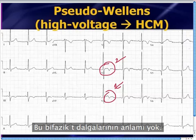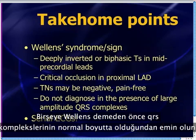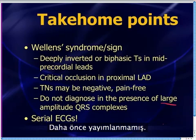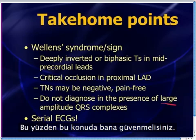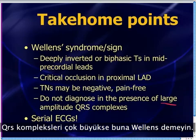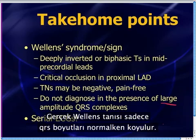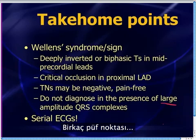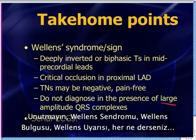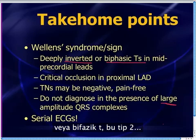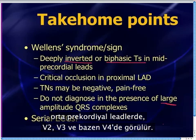One of the things I tell people: when you are calling something Wellens, you need to make sure the patient has normal-sized QRS complexes. That's not something written in the original paper — it's my own observation. Don't call things Wellens if the QRS complexes are very large or LVH-ish in nature. True Wellens should only be diagnosed when the QRS complexes are relatively normal in size.